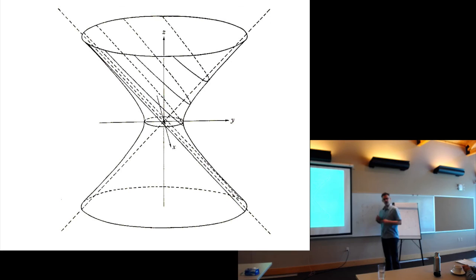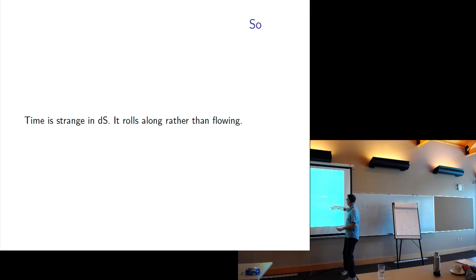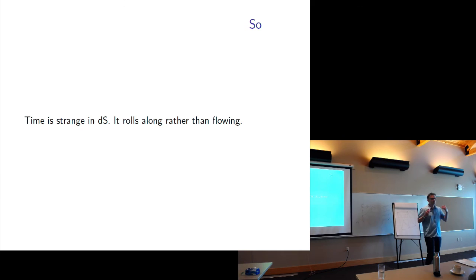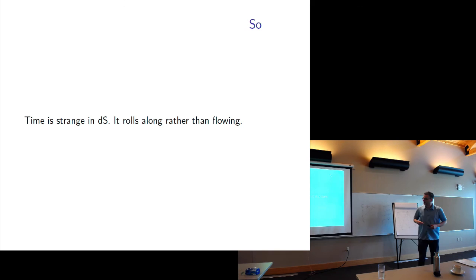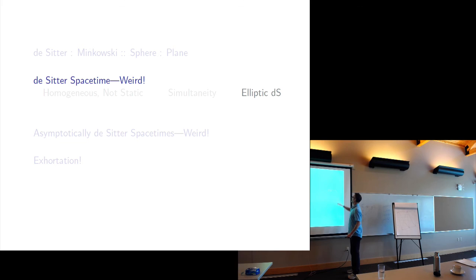Those are two ways of driving home the difference between the cosmological patch and the static patch — interestingly different geometrically and covering very different parts of the spacetime. My conclusion is: time is strange in de Sitter. The metaphors we usually use — flowing and so on — really depend on thinking about timelike Killing vectors as telling us about temporal symmetry, and there's nothing like that here. Lorentz transformations are more like rotations than time translations. Except in the static patch, there is no such thing as time translation in de Sitter spacetime.